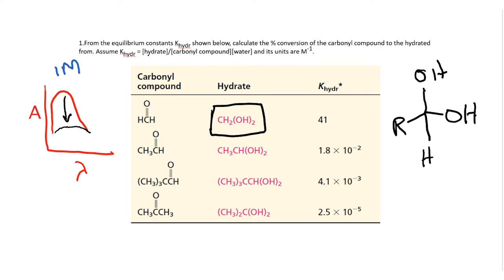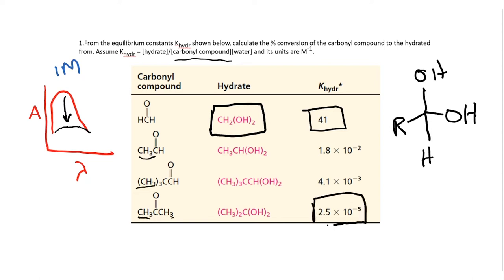You can experimentally determine the concentration of the carbonyl compound — what you started with — and you can get the carbonyl compound concentration after you added water. If you assume that the water concentration is 55 molar, you can estimate the concentration of water, and the concentration of hydrate will be the difference between these two values. This gives an experimentally determined equilibrium constant of 41 for formaldehyde, and as substitution on the aldehyde increases and if you form a ketone, the value of the equilibrium constant goes down.